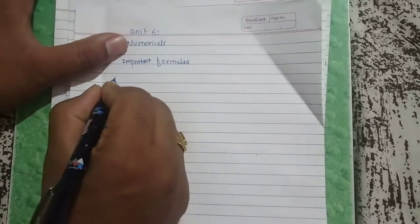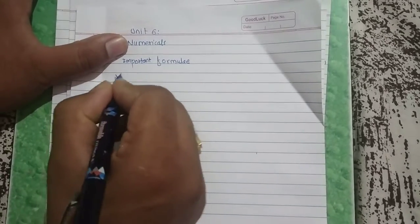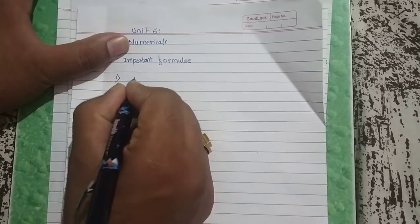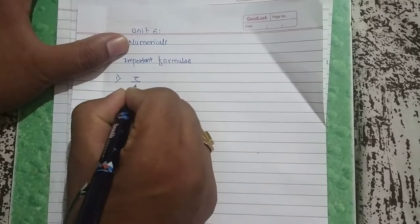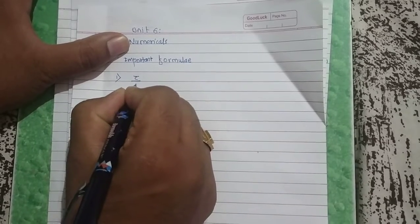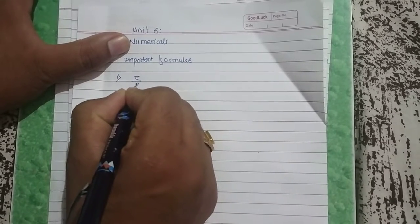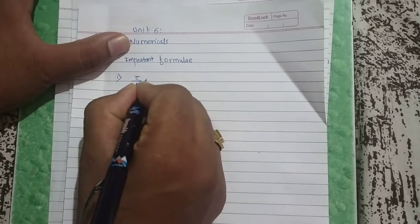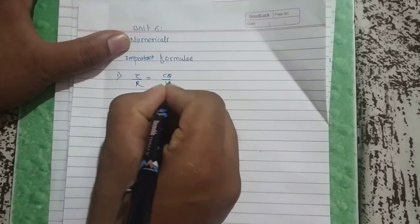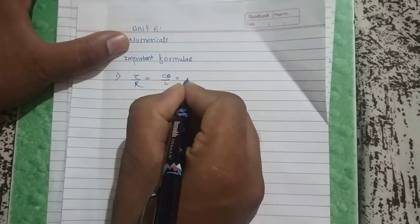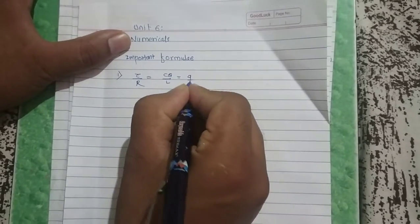First basic formula: you know that τ/r is equal to Cθ/L is equal to q/r.